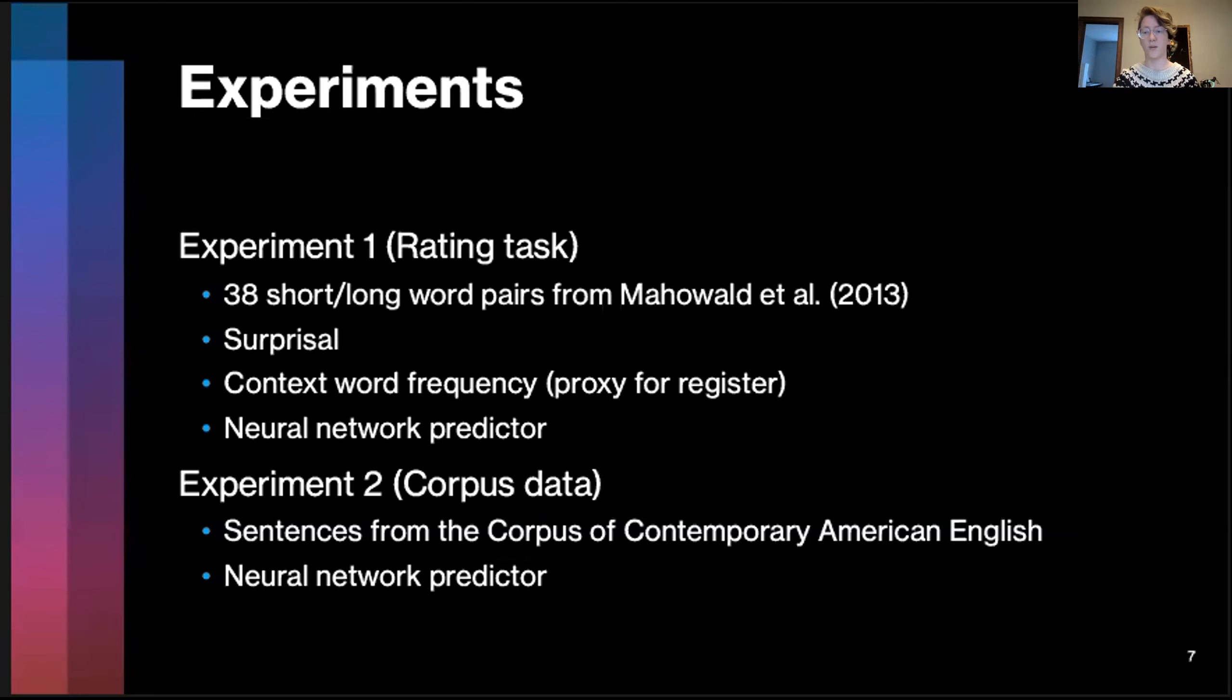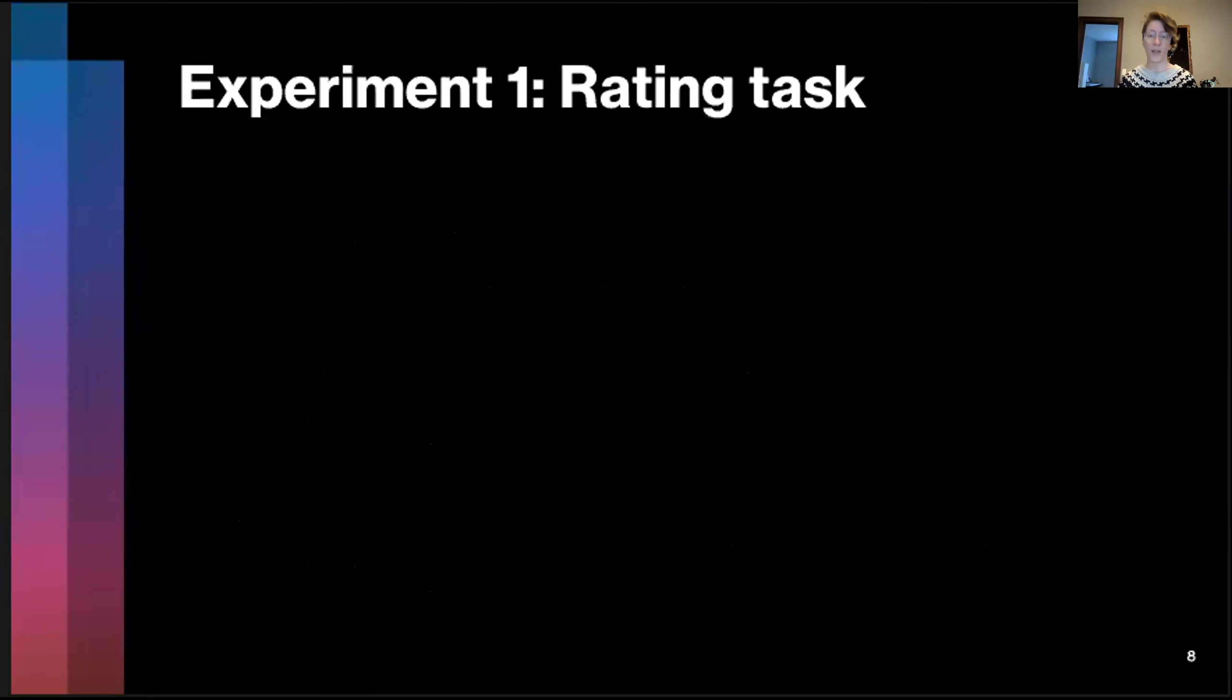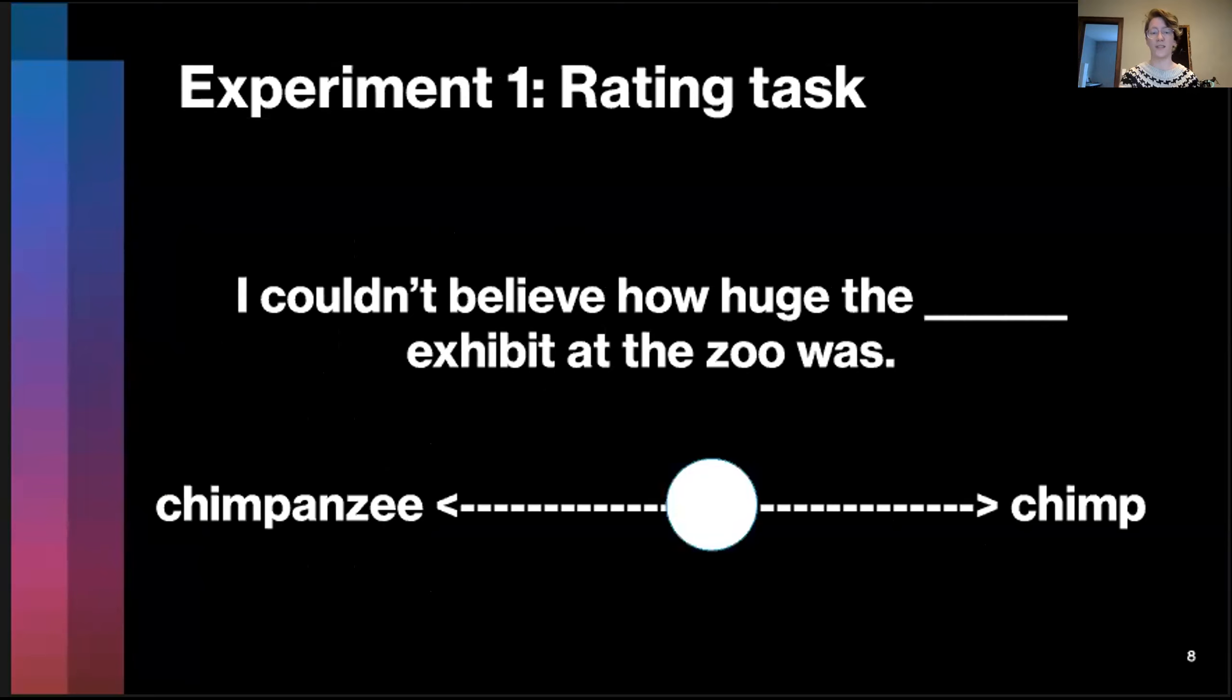We're also going to look at a neural network-based predictor that allows us to encode the entire sentence at once. The experiment rating task is very similar to, if you've read the Mawald et al. study before, the binary forced choice task that we have. But in contrast, we're not going to make people do a binary forced choice. We're actually going to let them modulate between their preferences. People start out with a slider at the beginning of seeing a sentence. There's a word that's in a blank, and it starts at the middle. They're allowed to say whether they think that one word at one extreme sounds better than a word at another extreme.